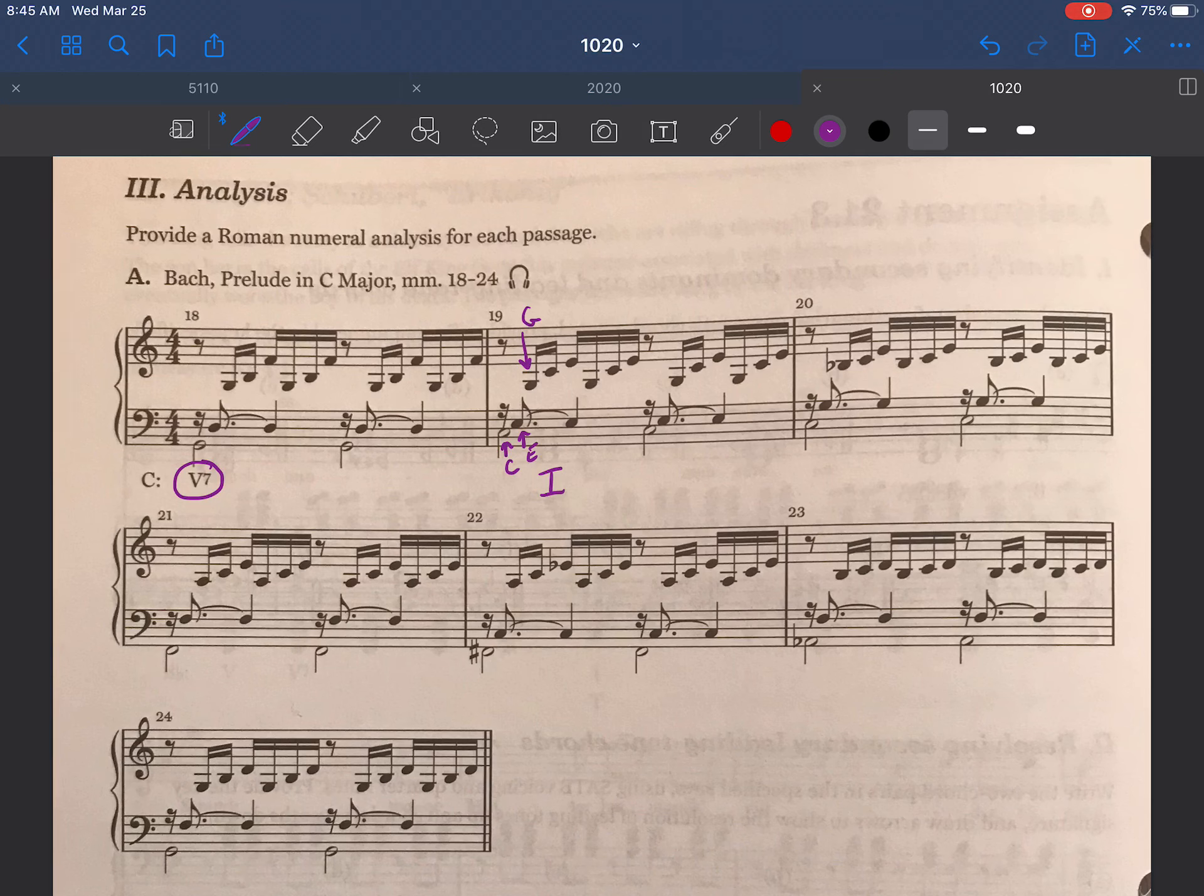In measure 20, I take a collection of the pitches that I have. That C is in the bass again. I have a G, I have a B flat, I have another C, and then I have an E. The rest of the pitches in the measure are repeats of what I've already found. Turn off the video for a minute, pause, and try to figure out what this chord is.